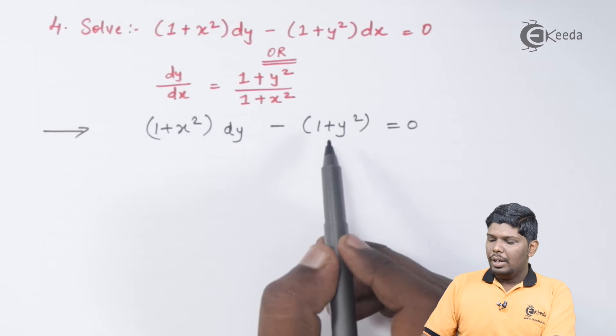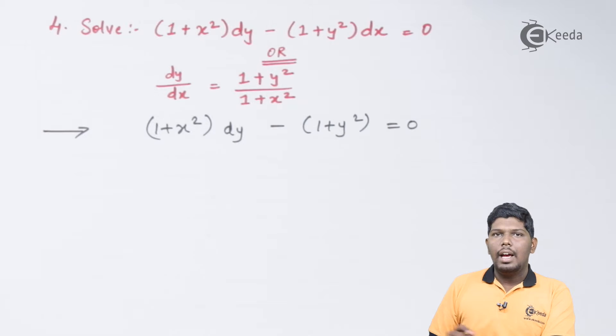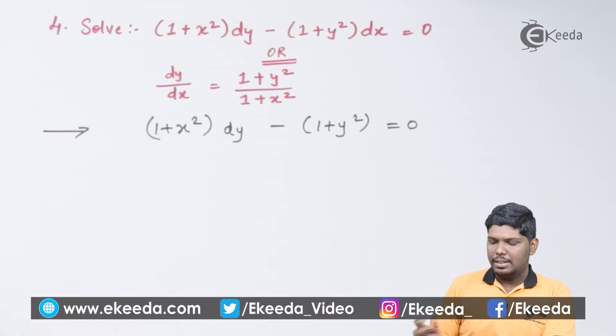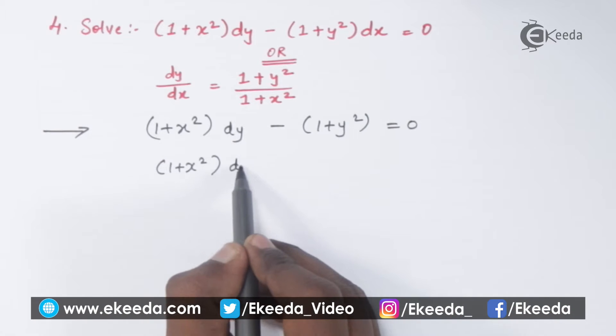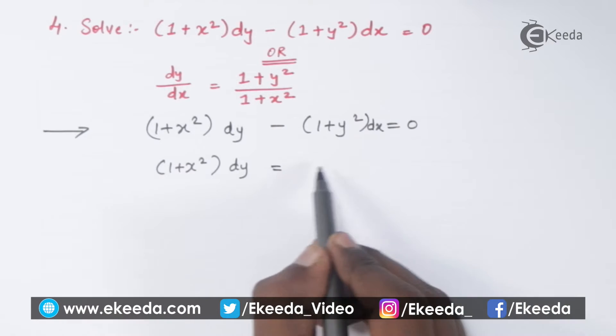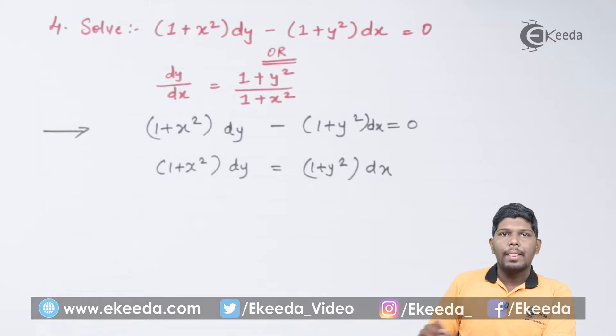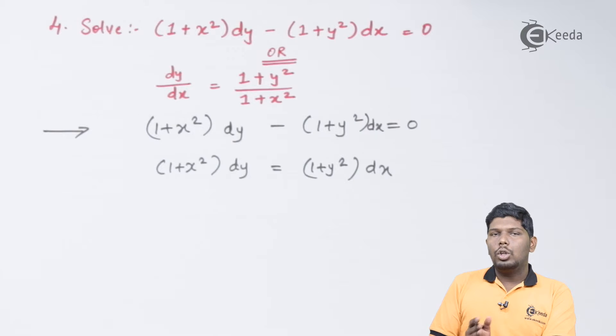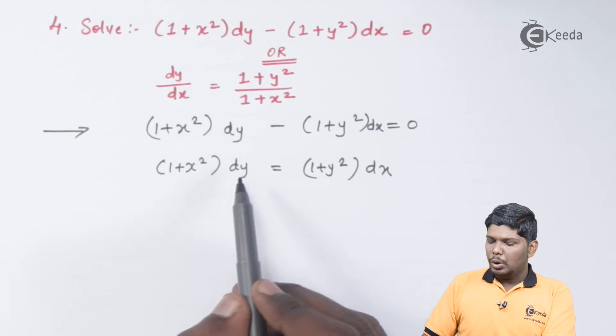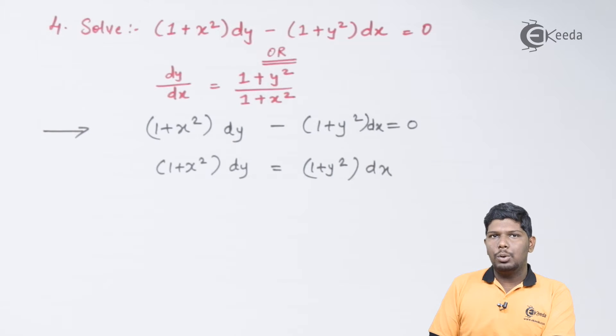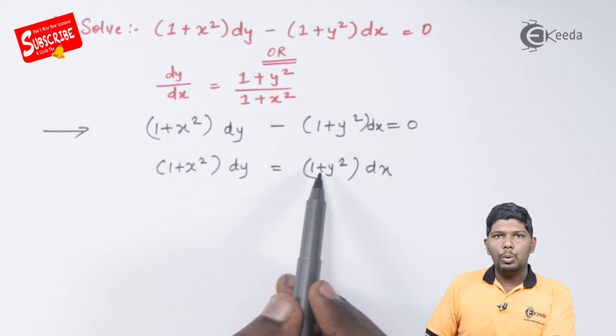Considering the first equation, I will take this part on the right hand side as I need to separate the variables. As you can see, both on the left hand side and the right hand side, we have x and y mixed. So, keeping dy and dx at their places only, we are going to interchange their positions.